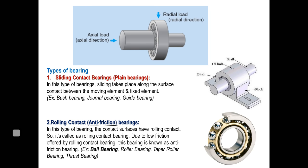The second category is rolling contact. As friction is comparatively low compared to sliding contact, these are also called anti-frictional bearings. In rolling contact bearing, rolling action takes place between the rolling element and the cage. There is an inner race and an outer race, and the rolling elements — in this case spherical balls, making it a ball bearing — are provided with a cage or separator. We will discuss this in detail in the next slide.